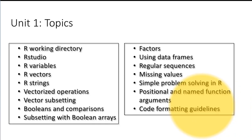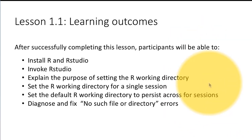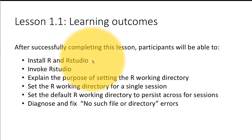Here is a list of all the lessons that make up this unit. The first lesson is on the R working directory. Here are the learning outcomes — things that you will be able to verifiably perform after completing this lesson. At the end of this lesson, you should be able to install R and use RStudio.